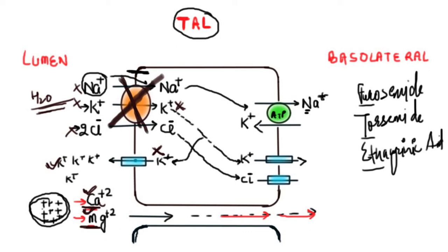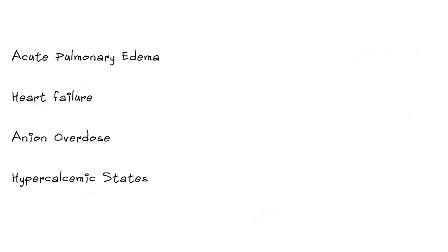Now let's look at the clinical scenarios in which we use loop diuretics. The first is acute pulmonary edema. In this setting, there is a collection of fluid within the lungs causing difficulty in lung expansion and shortness of breath. Once we administer the loop diuretic, it causes fluid loss from the body and ultimately the pulmonary edema resolves.